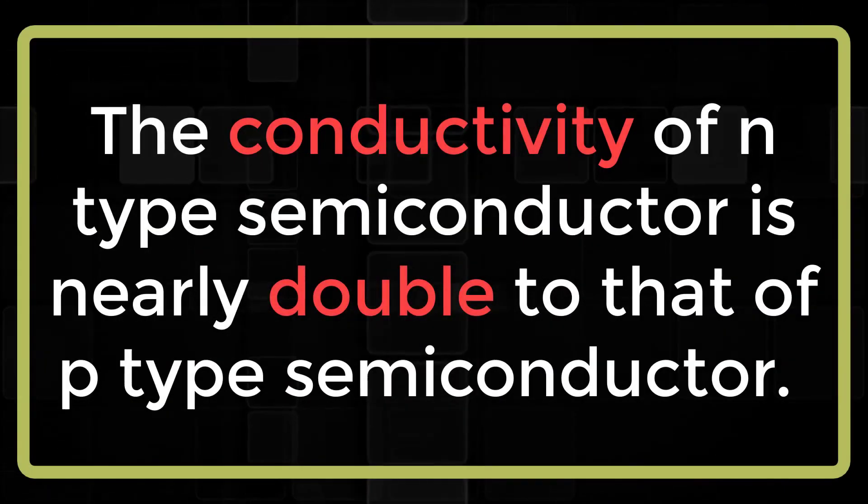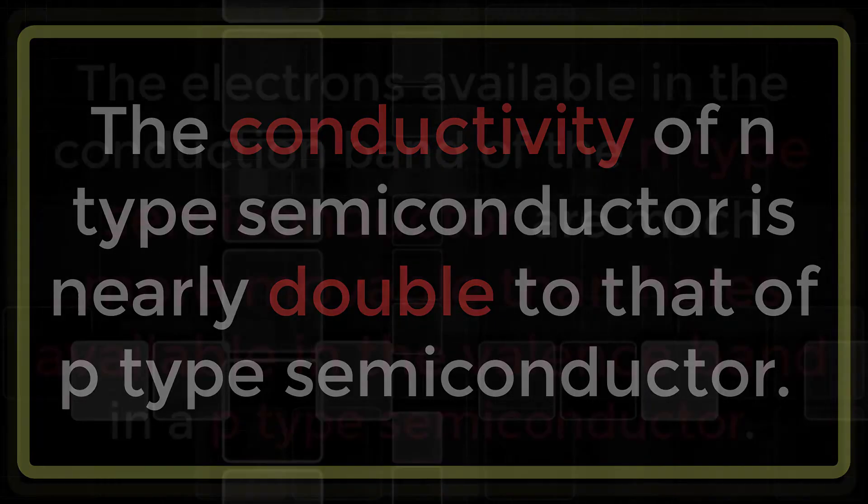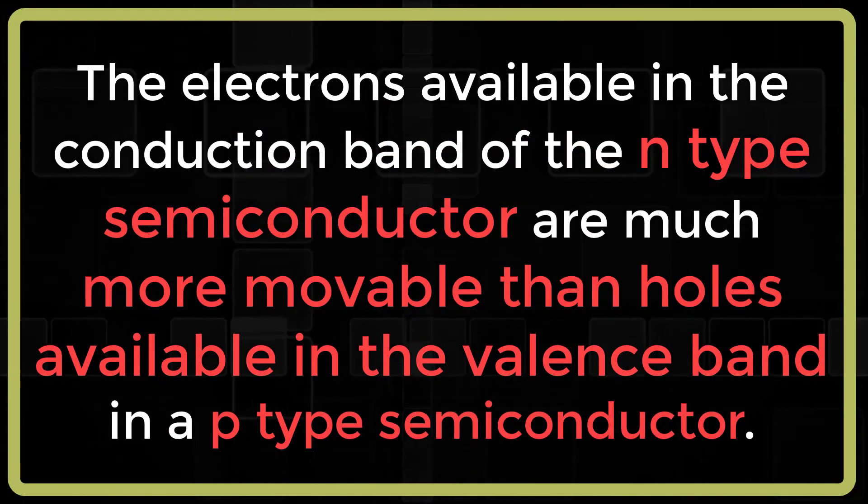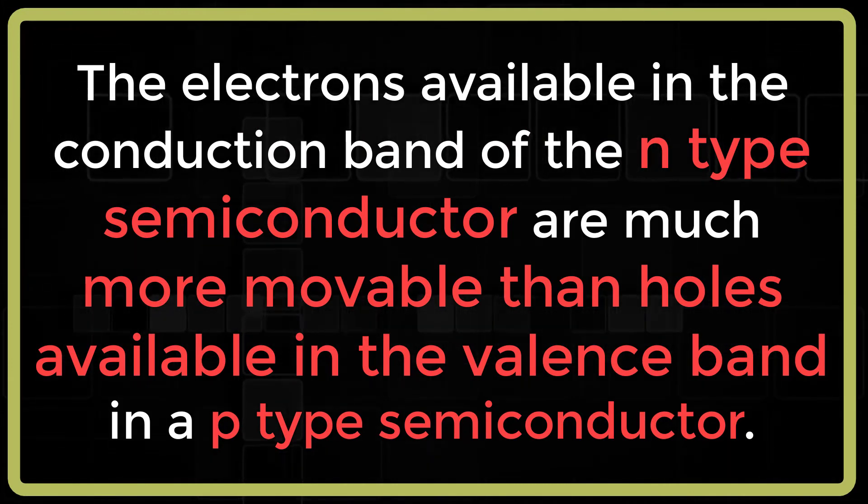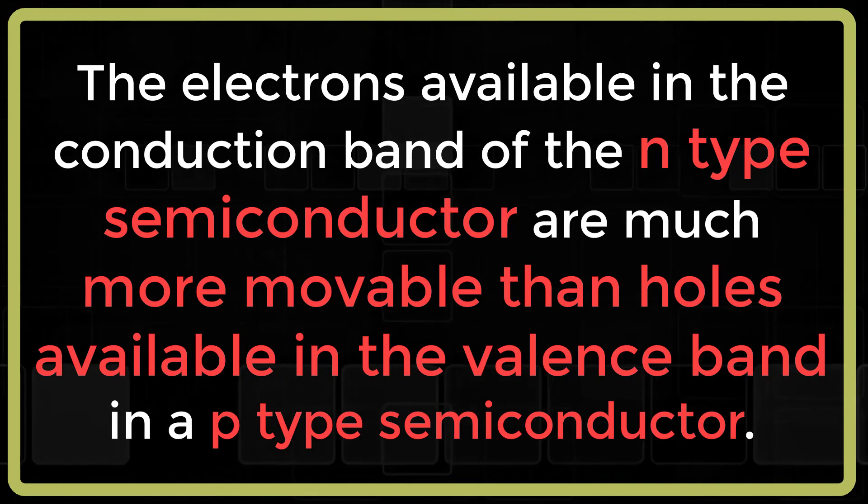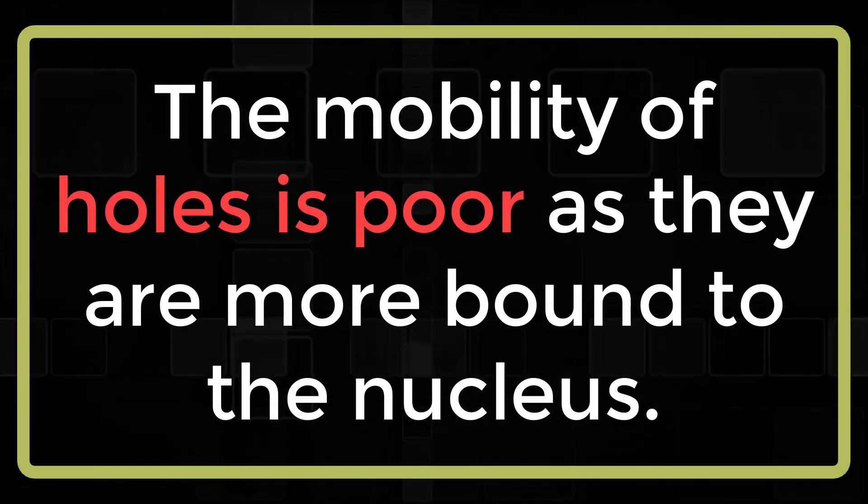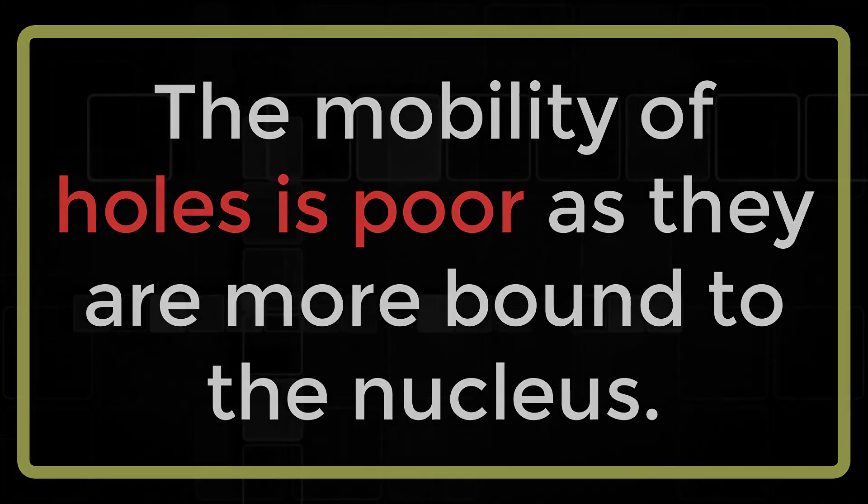The conductivity of N-Type Semiconductor is nearly double to that of a P-Type Semiconductor. The electrons available in the conduction band of the N-Type Semiconductor are much more movable than the holes available in the valence band in a P-Type Semiconductor. The mobility of holes is poor as they are more bound to the nucleus.